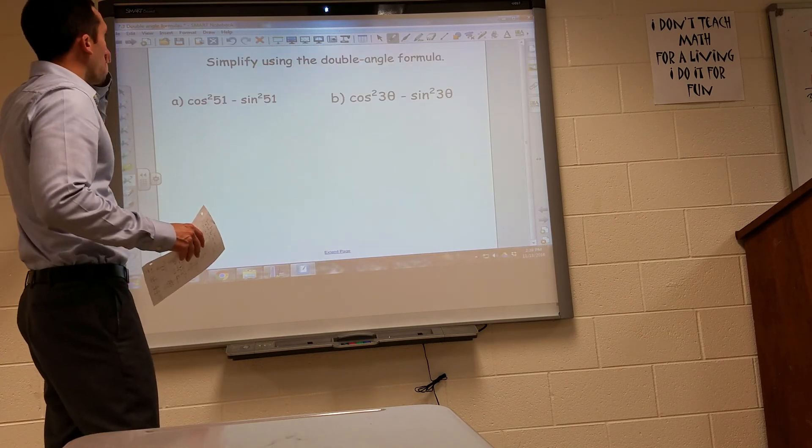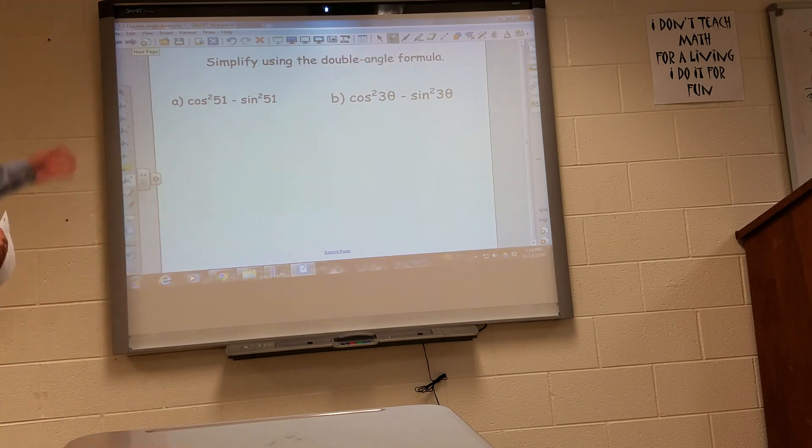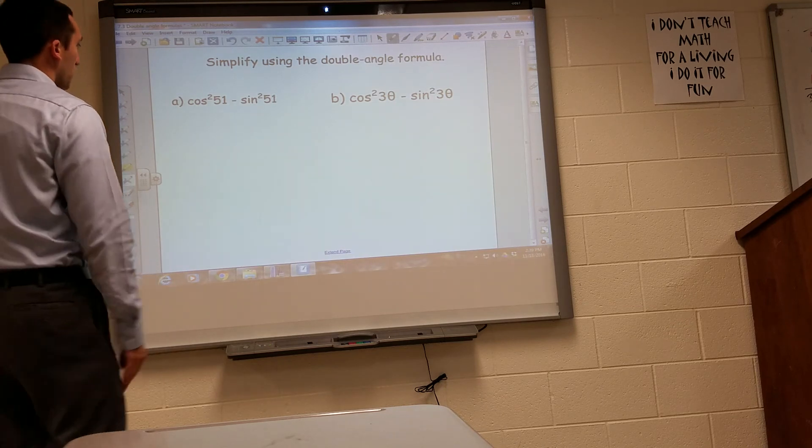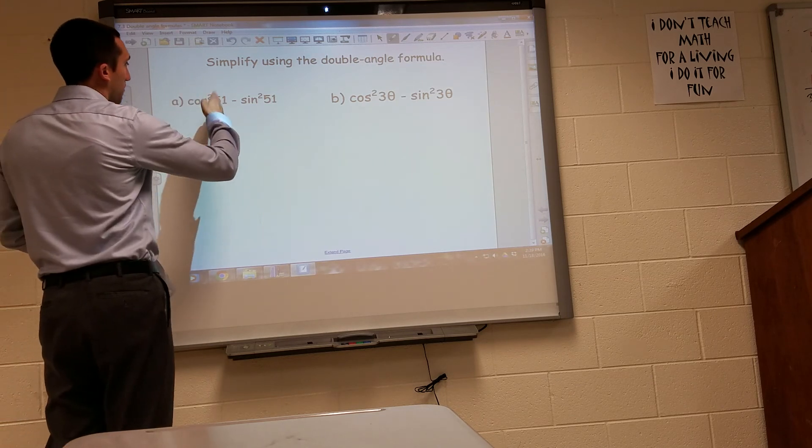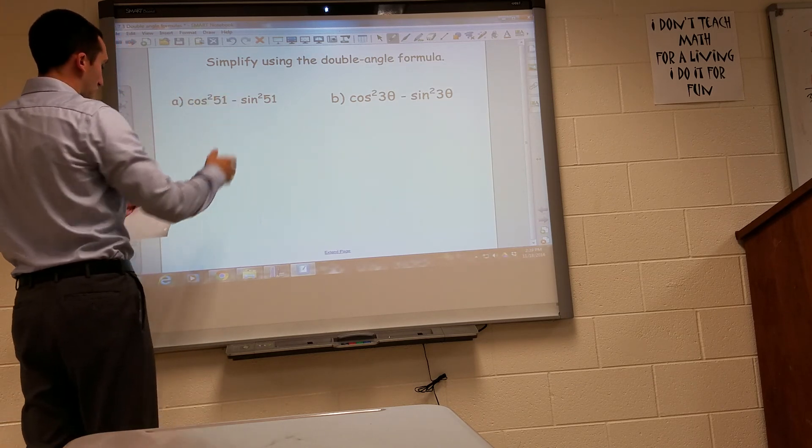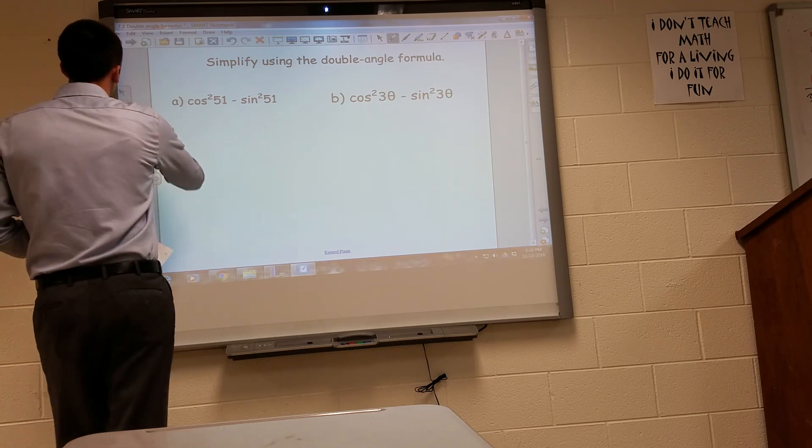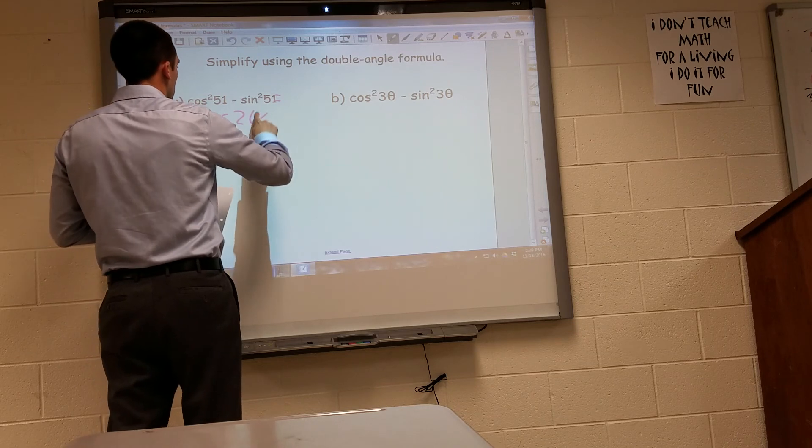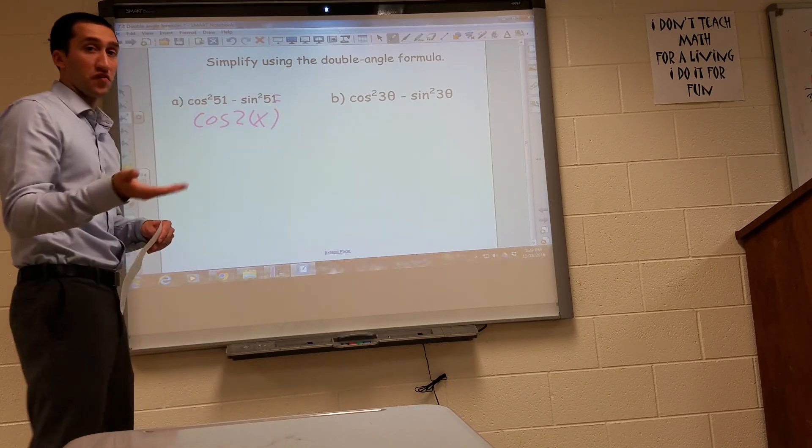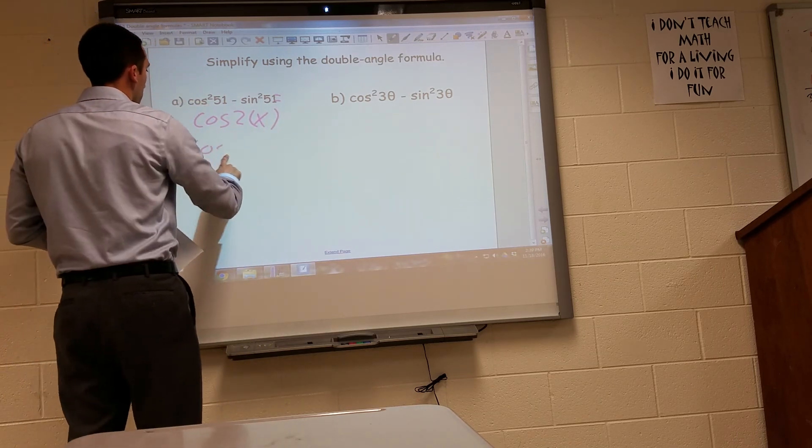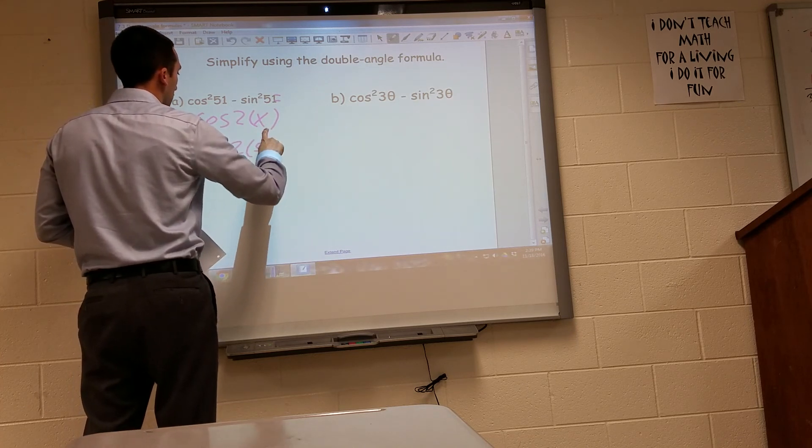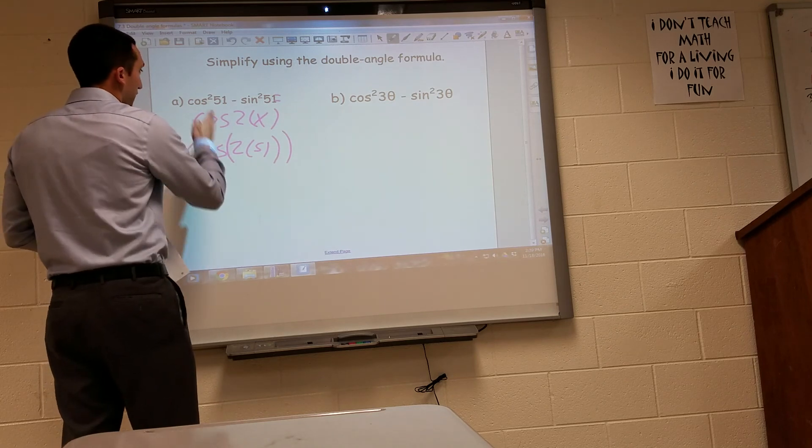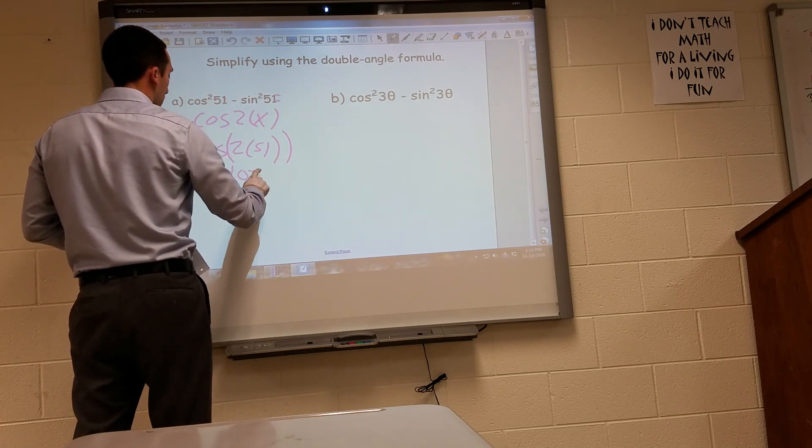And one more. They want us to simplify this using the double-angle formula. So since we know cosine squared of x minus sine squared of x is equal to, we know that this is equal to, cosine of 2x. Well, I know x is 51, so that gives me a cosine of 2 times 51. I'll put this all in parentheses. So this value here is the same as cosine of 102.